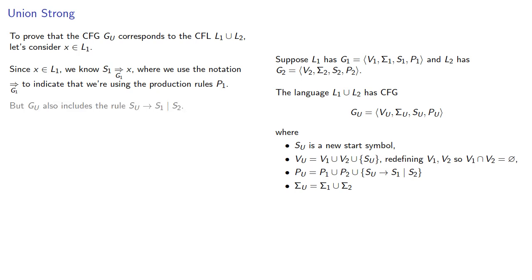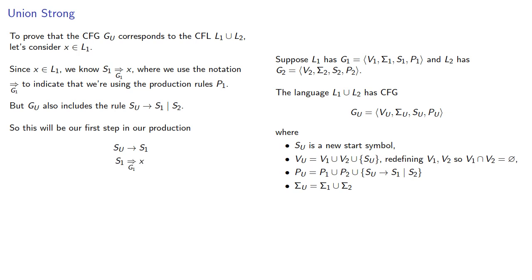But remember, our combined language also includes the production rule start symbol to either S1 or S2. So this will be the first step in our production. And now that we're in the start symbol for L1, we know there's a production of X. And so X is going to be in our combined language. And similarly, if X is in L2.